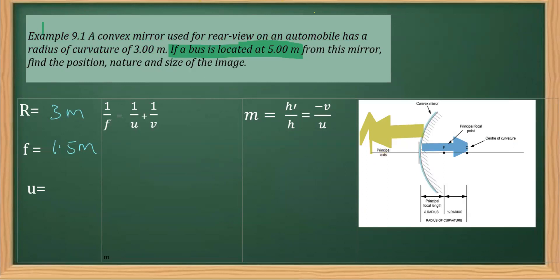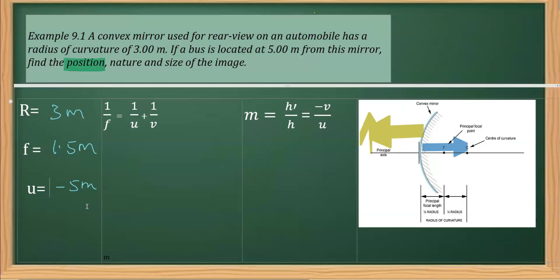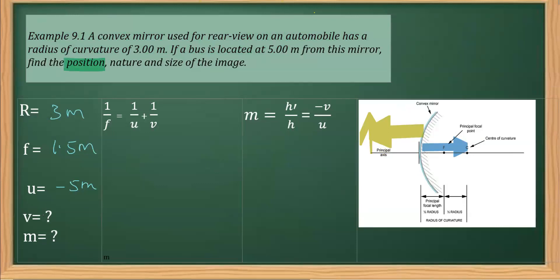That's why we are taking the object distance as negative, so u = −5 meters. Now, what we have to find: the question asks for the position, which is v, and also the magnification m. So v is what we have to calculate, and m is also to be found. We will apply the mirror formula to find these.